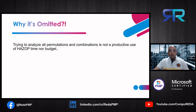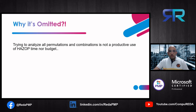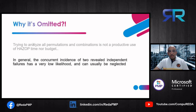Double jeopardy is omitted because, first, trying to analyze all the permutations and combinations is not a productive use of hazard study time nor budget — you have limited duration and limited budget and must abide by those constraints. Second, the concurrent incidence of two revealed independent failures has a very low likelihood and can usually be neglected.